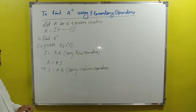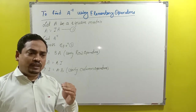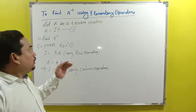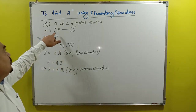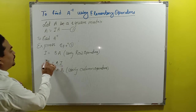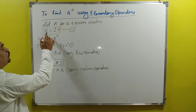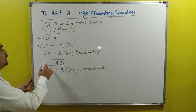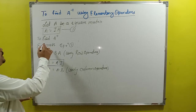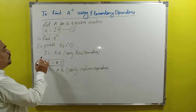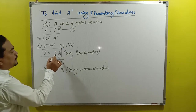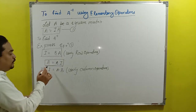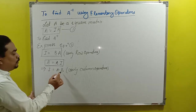This is very important. The operation will apply either only rows or only columns — we cannot mix. For row operation, consider A = I·A and express I = B·A; this B will be your A inverse. For column operation, consider A = A·I and express I = A·B; this B will be your A inverse.